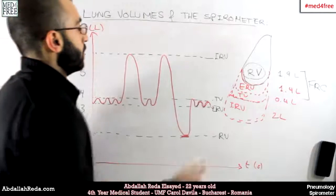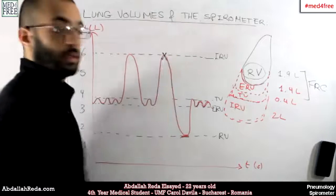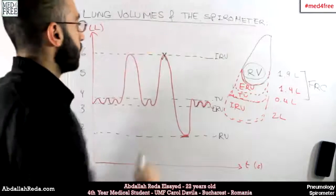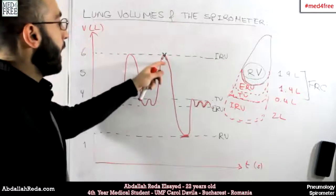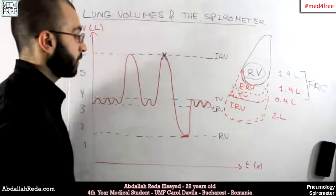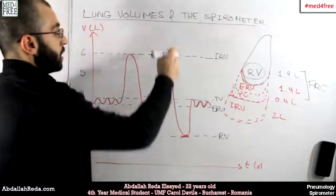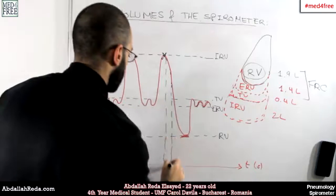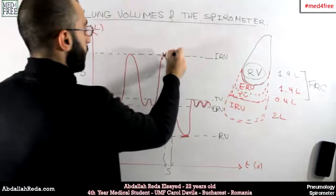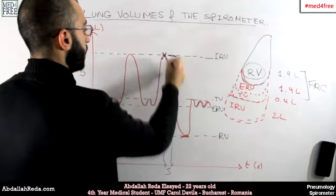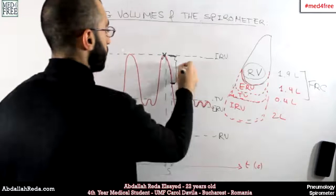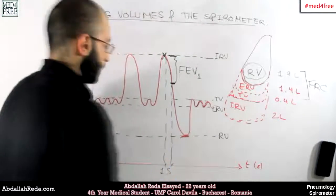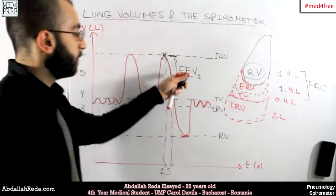This peak here is where the inspiration process has reached its maximum and the expiration just started. We take one second from that point on the time axis, and the volume expired in that one second has a name — it is called forced expiratory volume in one second, because it is one second. This is written as FEV1.